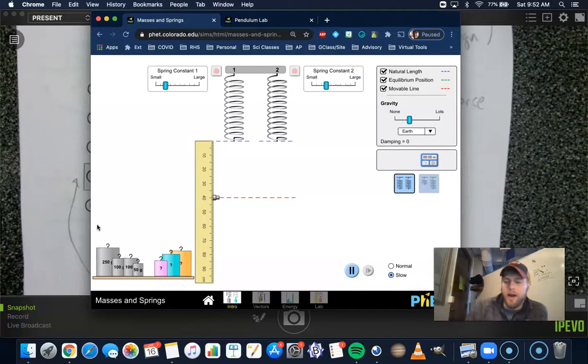Alright, I've got this setup in a way that I think makes sense. If you'd like to do the same, I just went to the masses and springs simulation. I'm in the intro where you can have two different springs. I've included the ruler and check this stuff on.